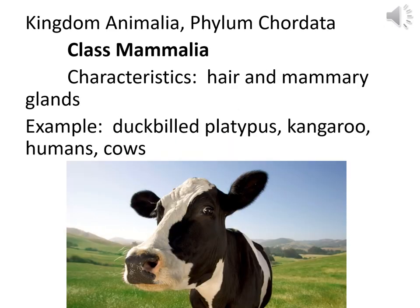Class Mammalia has hair and mammary glands, like the name says. It does include everything from a duck-billed platypus to kangaroos to humans, cows, cats, dogs, etc. Check with your instructors — sometimes people get into more details with different orders, but not for lab.